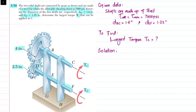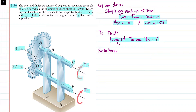From the given data: the allowable shearing stress is 7000 psi, the diameter of shaft BC is 1.6 inch, and the diameter of shaft EF is 1.25 inch. We have to find the largest torque TC that can be applied at point C.